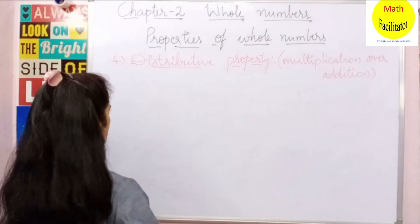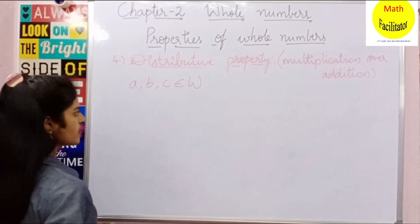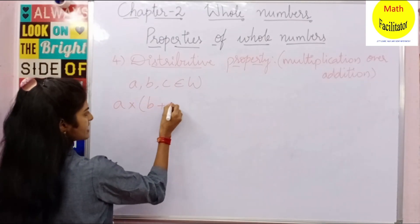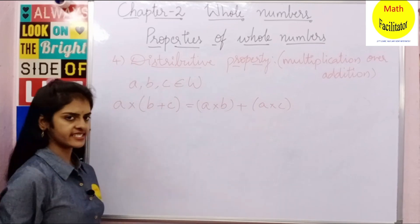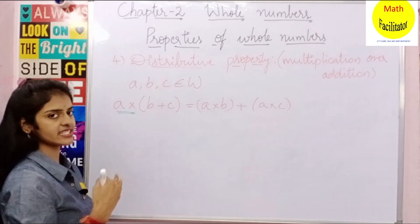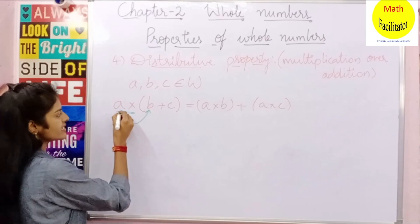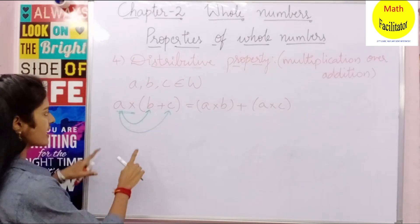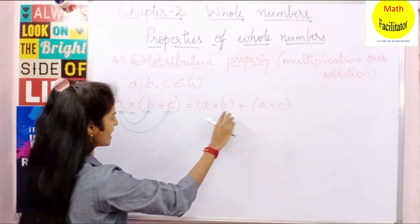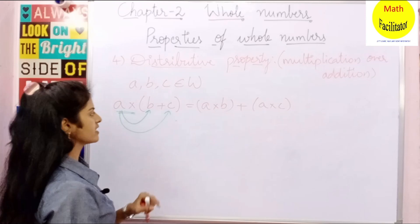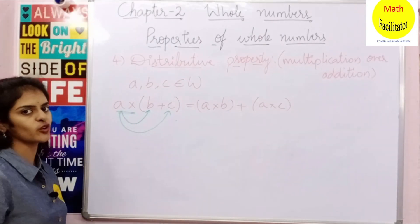Here we also take 3 numbers. This property is A into (B plus C) is equal to A into B plus A into C. Just observe — as the name says, it is distributive property. This A, which is in multiplication, is distributed to B as well as to C. So we write A into B plus A into C.